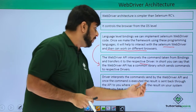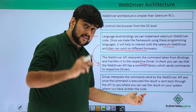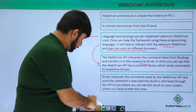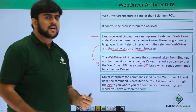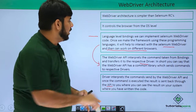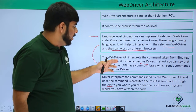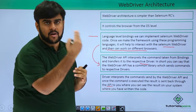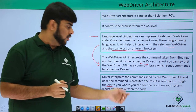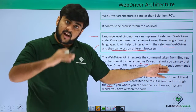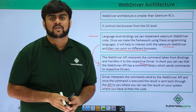The driver interprets the command sent through the WebDriver API, and once the command is executed the result is sent back to the API where you see the result on your system. So the flow is: you type something in your language, it is interpreted by the driver, which sends the command to the respective browser driver. From there the command is processed and the result is sent back to the WebDriver API, and you see the result in your code's language.